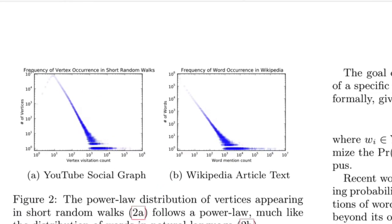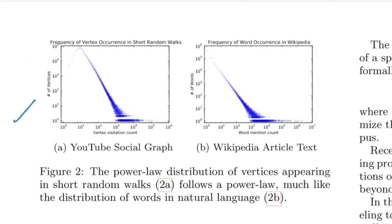This is the graph that they are mentioning. As you can see in the first graph, the Y axis shows the number of vertices, whereas the X axis shows the frequency with which that vertex occurs in those short random walks. This clearly shows there are very large number of vertices that occur very less, and there are very low number of vertices that occur very frequently in the short random walks.